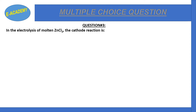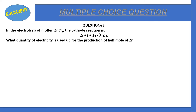Question number 3: In the electrolysis of molten ZnCl2, the cathode reaction is Zn²⁺ + 2e⁻ → Zn. What quantity of electricity is used for the production of half a mole of zinc? Options: 1 Faraday, 2 Faraday, or 2 Ampere. The correct option is B: 1 Faraday.